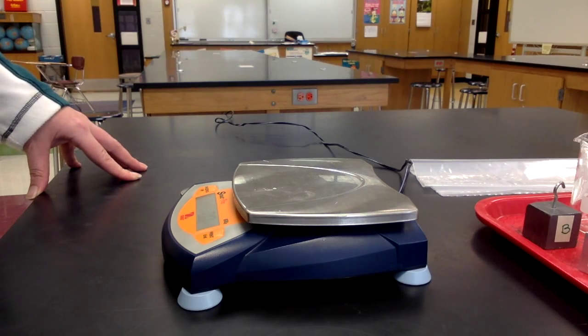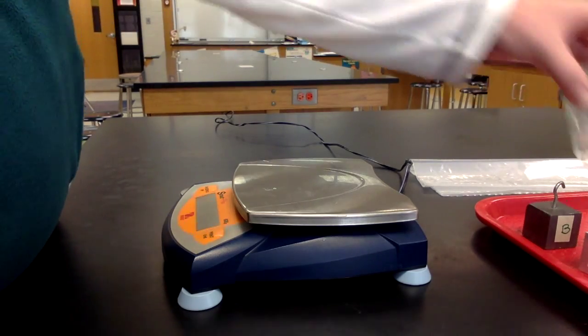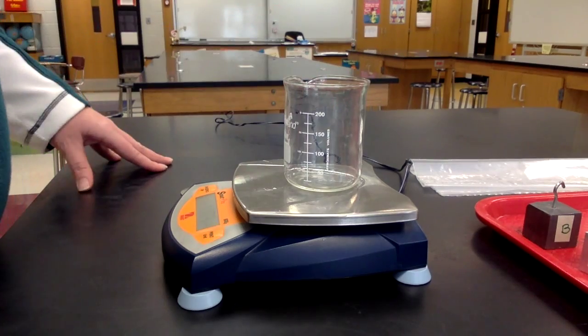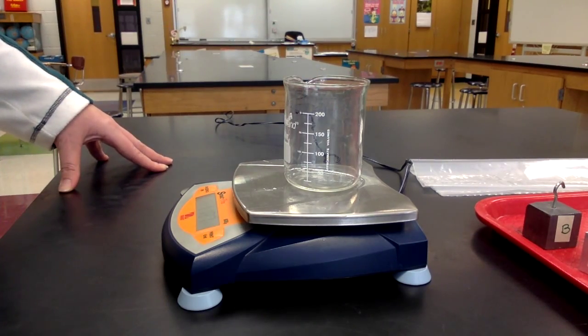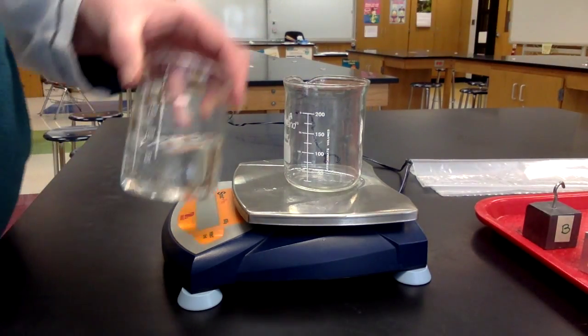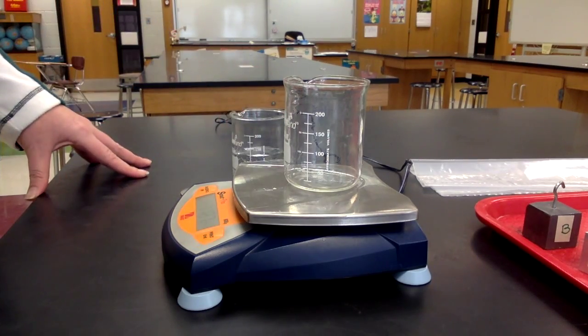To measure the mass of a liquid, you must first measure an empty beaker. This is the container that the liquid will be in. Record that number.